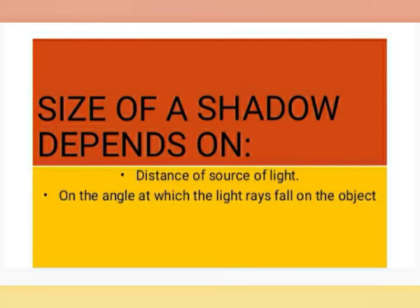The size of a shadow depends on the following two factors. First is the distance of the source of light. If the source of light is closer to the object, then a larger shadow will be formed. And when the source of light is far from the object, then a smaller shadow will be formed.